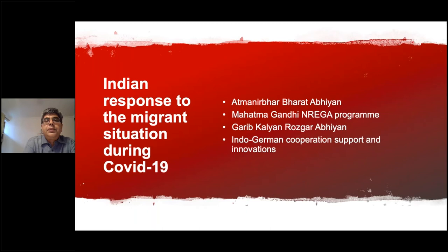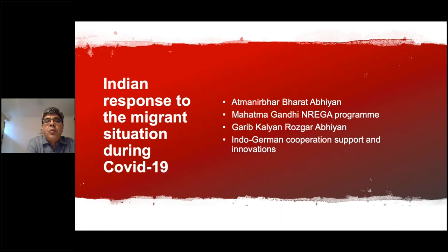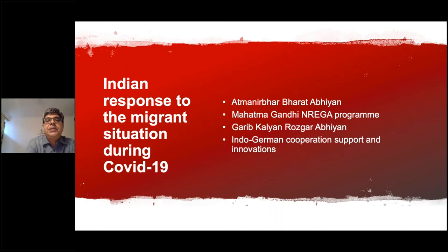What has been the national level response? There are four key types of initiatives taken by the government, apart from philanthropic and social support: first, the Self-Sufficient India campaign; second, the Mahatma Gandhi National Rural Employment Generation Program (MGNREGA) — the largest social protection program in the world; third, a new program for COVID-19 — the Employment Welfare Scheme for the Poor (Garib Kalyan Rojgar Yojana); and fourth, the Indo-German cooperation initiatives.